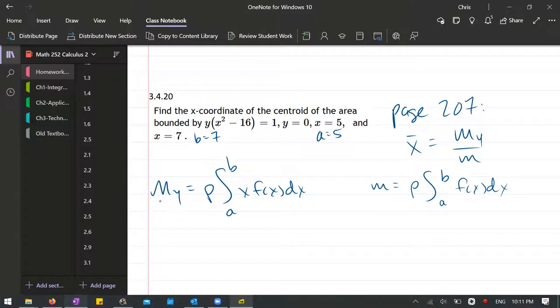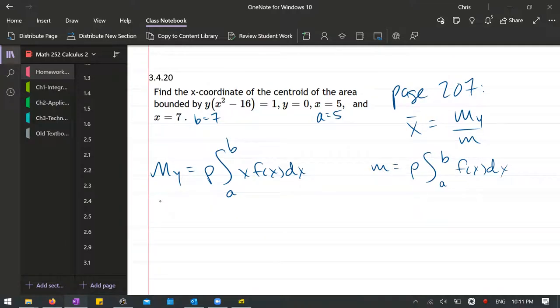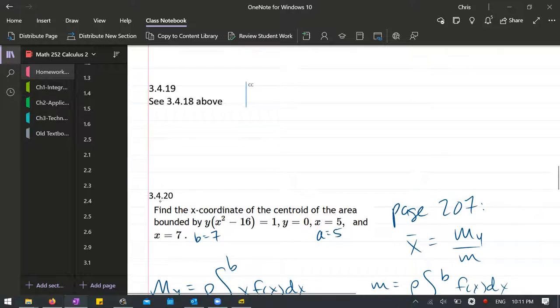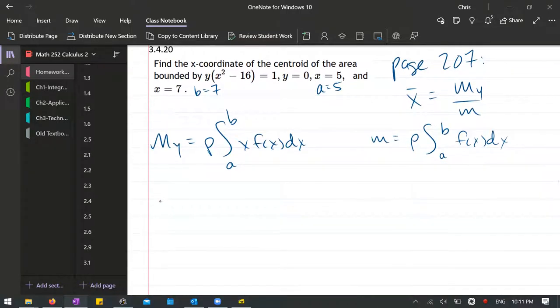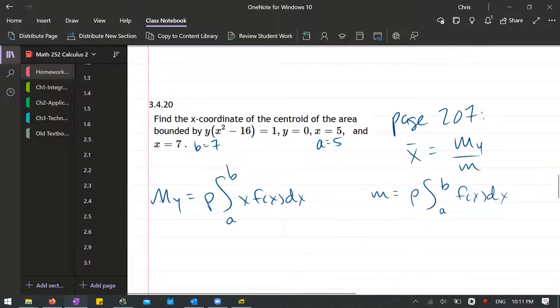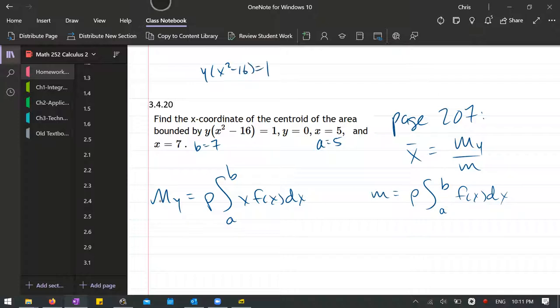All right, so I have those written down. We're just going to find each of those. So first of all, what's our function of x? Let's go ahead and take care of that first. We want a function of x, y as a function of x, so it's 1 over x squared minus 16.